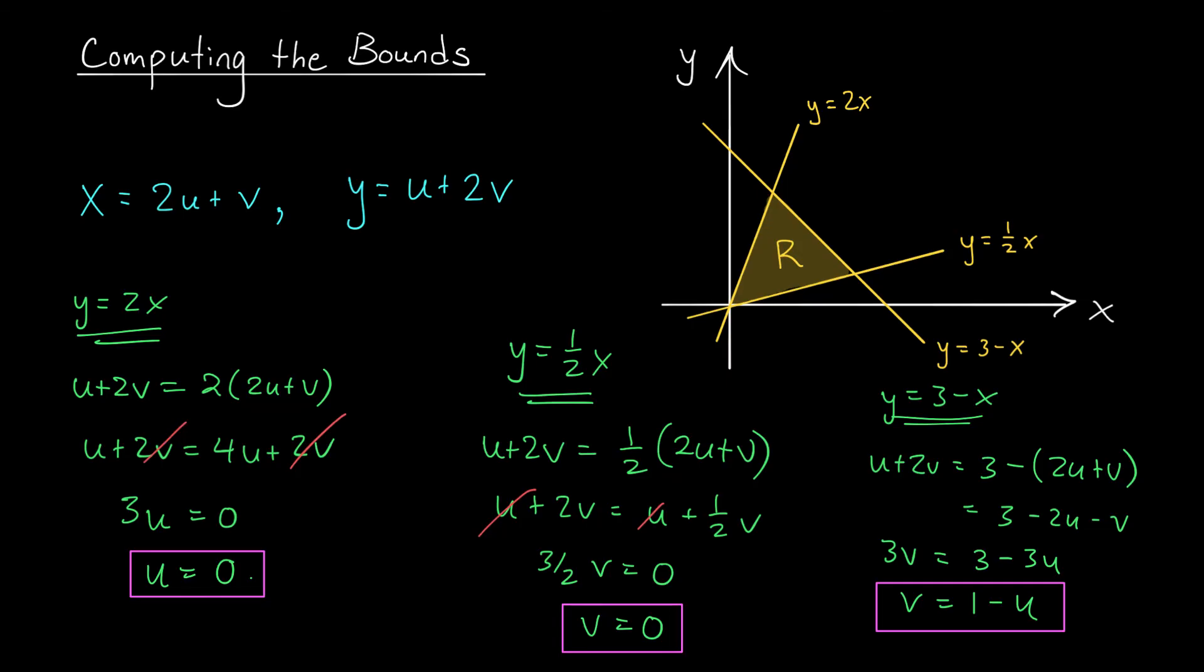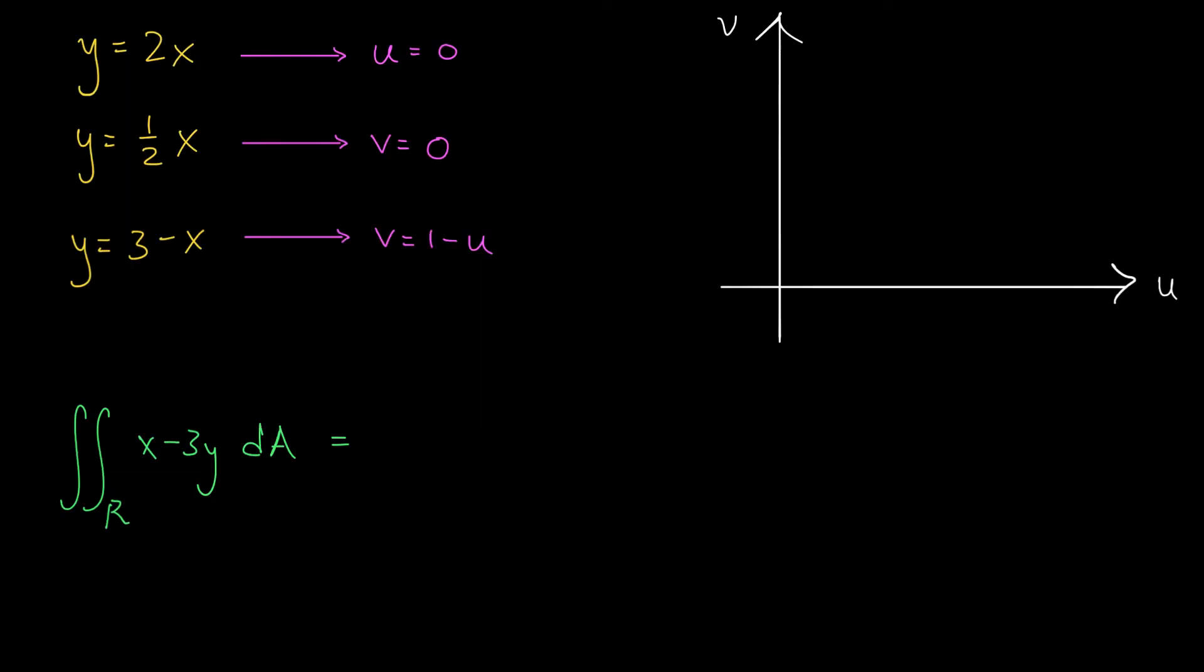Let's sketch this region in the uv plane and set up our integral. On the last slide we saw how the boundary of R changes with our transformation. In the uv plane our new region can be described using the lines u = 0, v = 0, and v = 1 - u. So let's start by graphing u = 0.